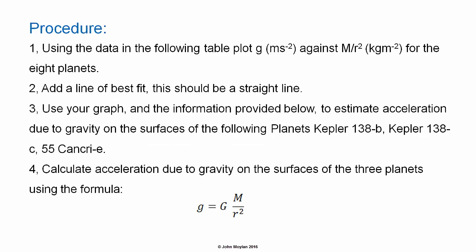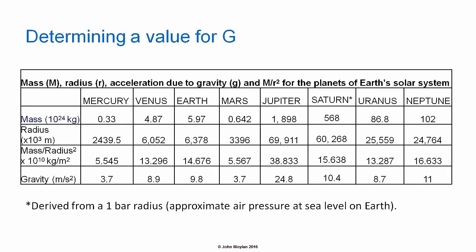Procedure: using the data in the following table, plot g in meters per second squared against M/r², where M is the mass of the planet in kilograms and r is the distance from the center of mass in meters — units of kilograms per meter squared. For the planets, add a line of best fit; this should be a straight line passing through the origin. Then use your graph and the information provided to estimate the value of acceleration due to gravity on the surfaces of Kepler 138 b, Kepler 138 c, and 55 Cancri e, and finally calculate the value of acceleration due to gravity using the formula g = GM/r².